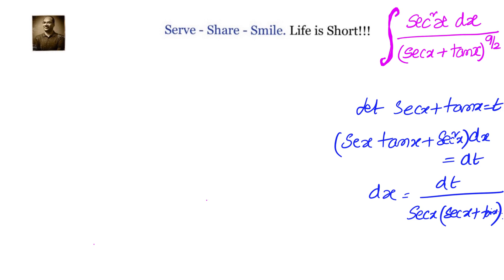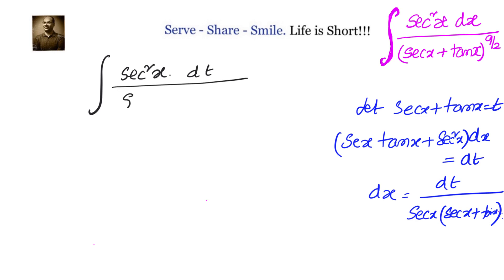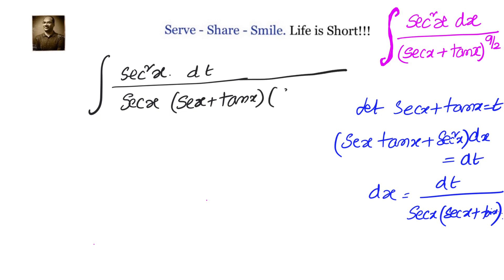Now let's go to the given problem and convert it into t. We write the integral of secant squared x, and dx is replaced by dt divided by secant x into secant x plus tan x. We already have in the denominator secant x plus tan x whole to the power of 9 by 2.